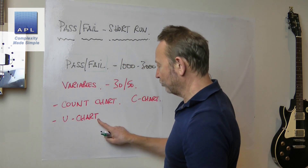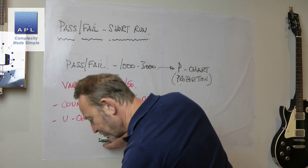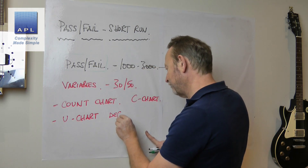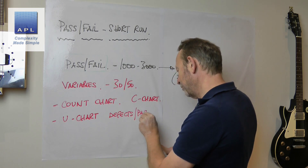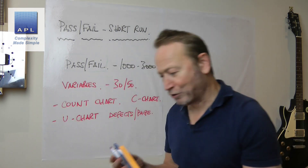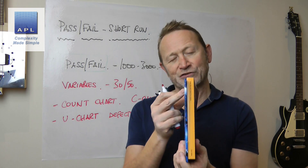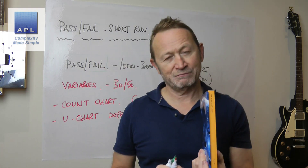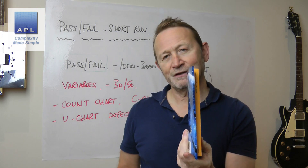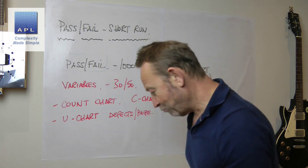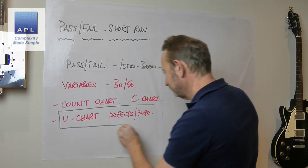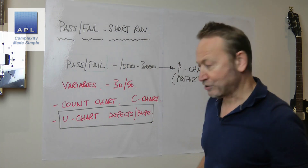What you could use is known as the u-chart. What the u-chart does is normalize two different sizes of product. The u-chart gives you defects per page, as opposed to defects per book. If we do defects per book and the books are dramatically different in size, you can't represent them on the same graph. But if you do defects per page, that normalizes the result, and once normalized, this chart could be used as a short-run SPC chart.